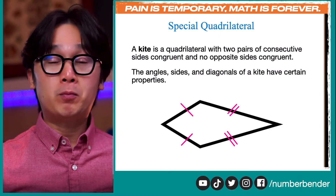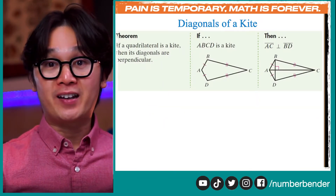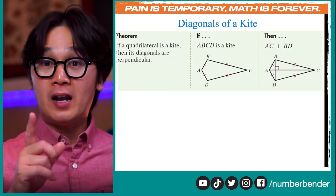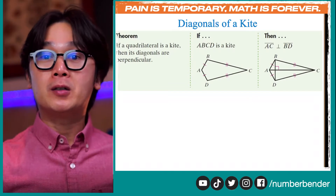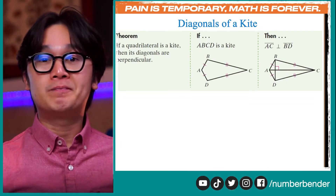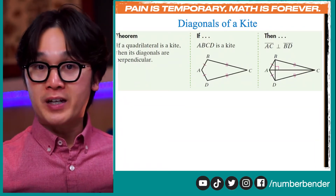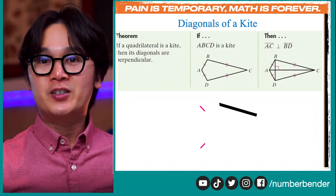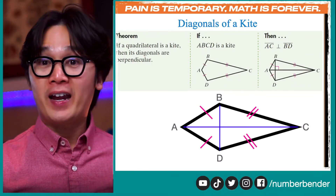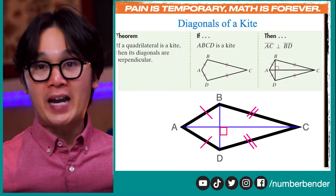The first theorem: given kite ABCD, if we connect points A and C and connect points B and D, we'll produce a perpendicular bisector — that is, AC is perpendicular to line segment BD. So if we connect line AC and point BD in kite ABCD, we produce a perpendicular bisector, which means this angle will equal 90 degrees.